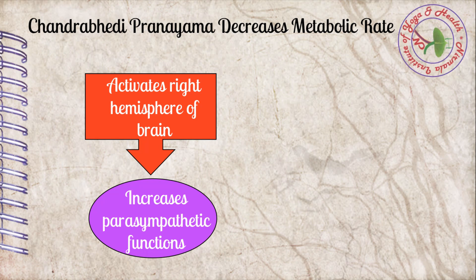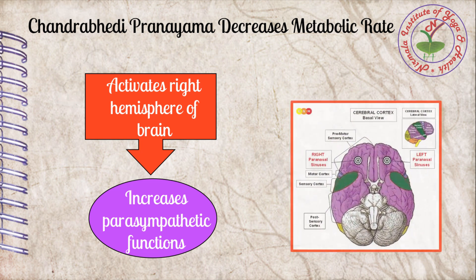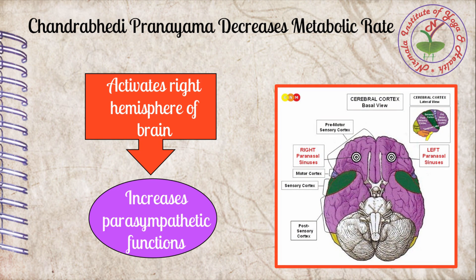Chandrabhedi pranayama decreases metabolic rate. In this practice, inhalation is done through the left nostril by closing the right, and exhalation through the right nostril by closing the left. Continuous inhalation through the left nostril stimulates the nerve plexus in the mucus lining of the left nose, which is connected to the autonomic nervous system.